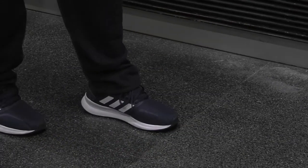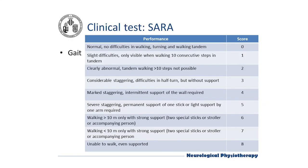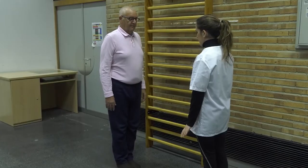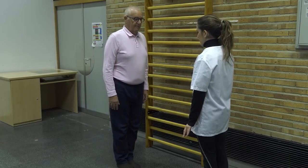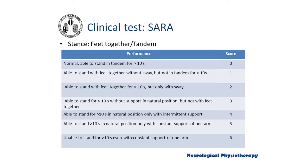The patient is asked to stand in three different positions for 10 seconds each: firstly in a natural standing position; second with feet together in parallel, big toes touching each other; and thirdly in tandem, both feet on one line with no space between heel and toe. The patient does not wear shoes and eyes are open for all three tests. For each condition, three trials are allowed and the best one is scored.